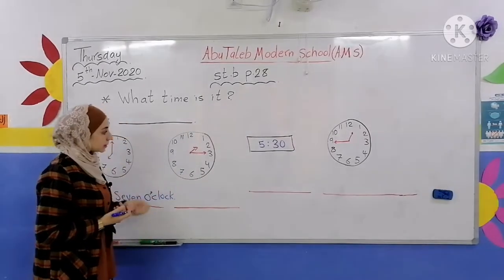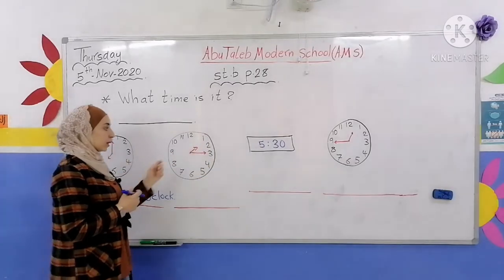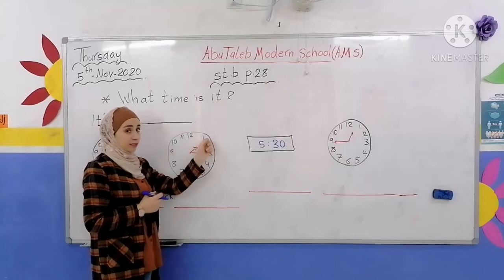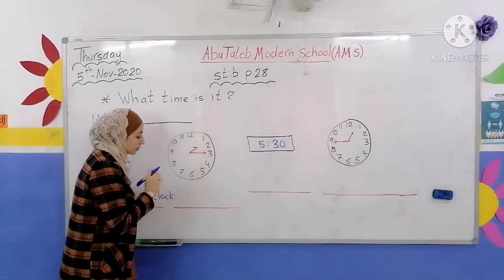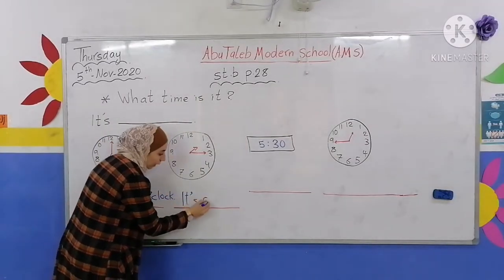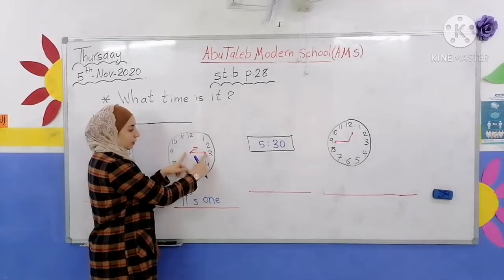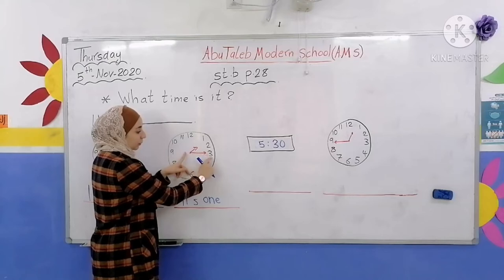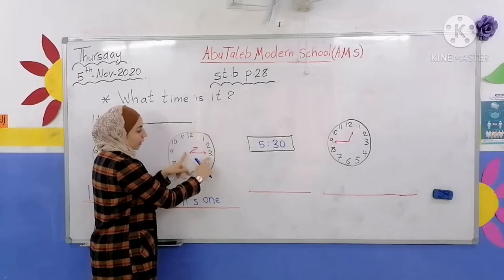Here, what time is it? It's one fifteen. First, look at the small hand (عقرب الساعات) — it's on one. So we start with: It's one. Then look at the big hand (عقرب الدقائق) — it's on three. When the minute hand is on three, that means fifteen — a quarter. So: It's one fifteen — الواحدة والربع.